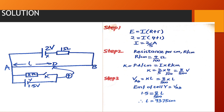Step 3 is to calculate the PD from point A to point D. We have found the value of k — the PD per centimeter — so multiplying by the balance length L gives the PD from A to D. Setting that equal to the EMF of cell Y: 1.5 equals 8 over 500 times L, which gives us a balance length L of 93.75 centimeters. That is how you get the balance length when the switch is open.